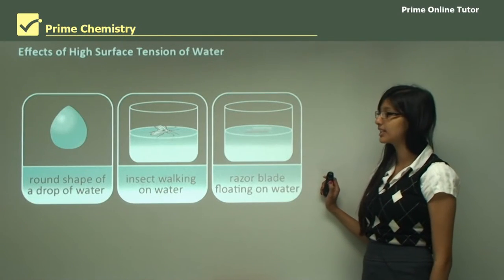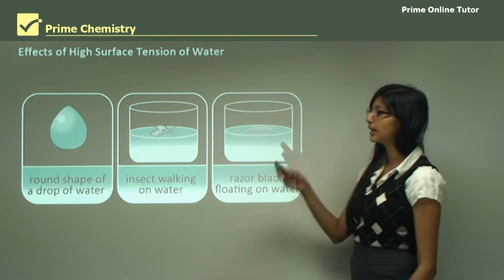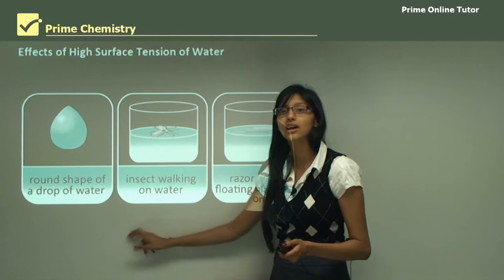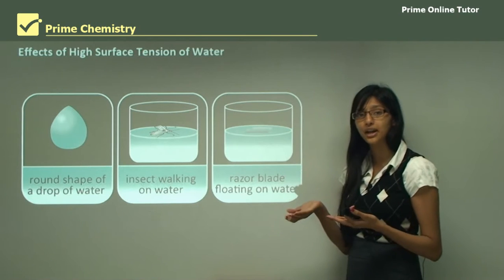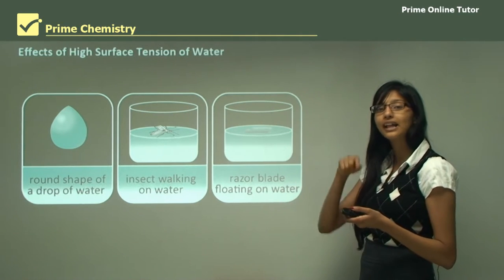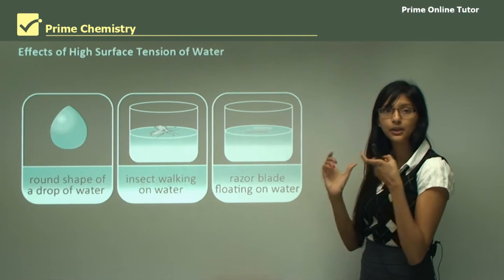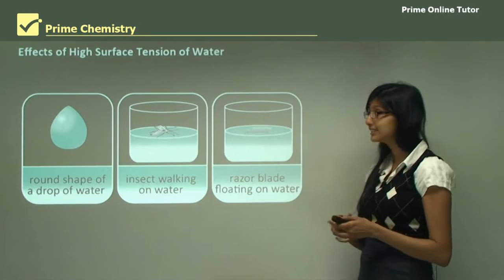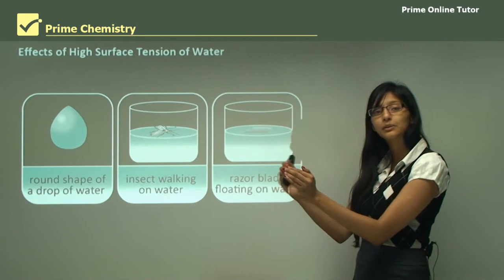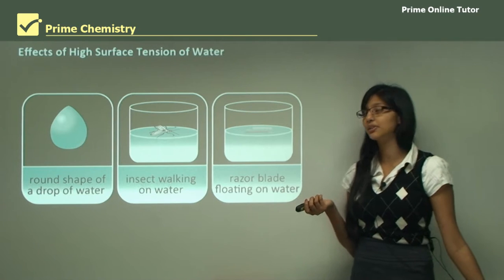The effects of surface tension allow water to do many different things. When you look at droplets of water, for example on a leaf after rainfall, you would see that the droplets are always a round, circular shape — not square. The surface tension holds the water molecules together in a circular shape, and that's why the droplets of water have a round shape.